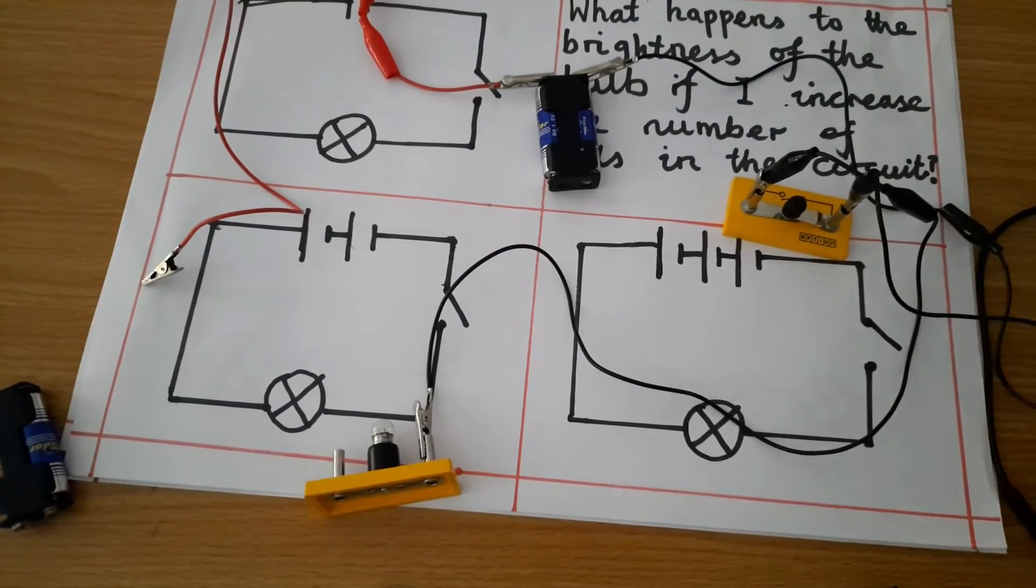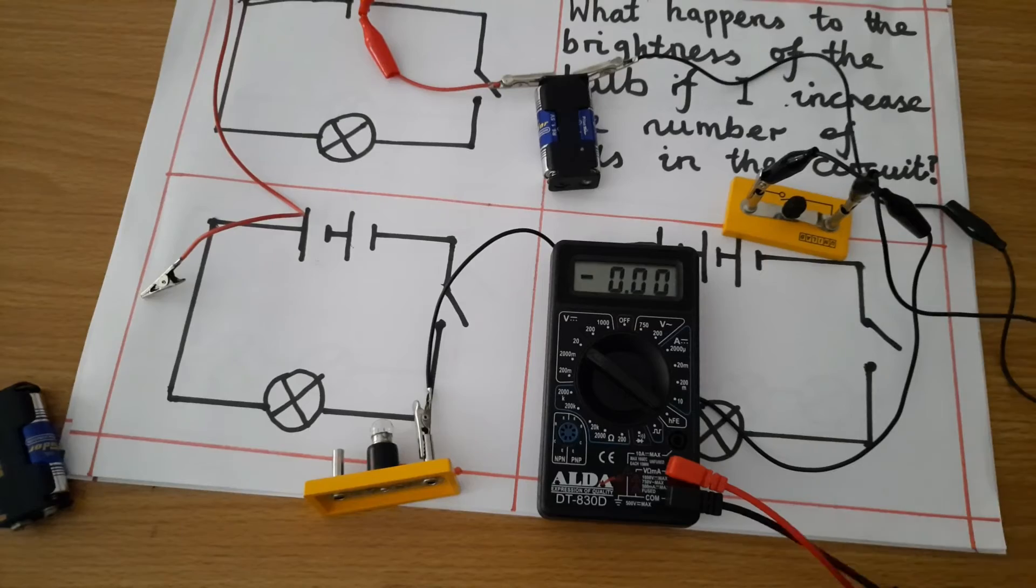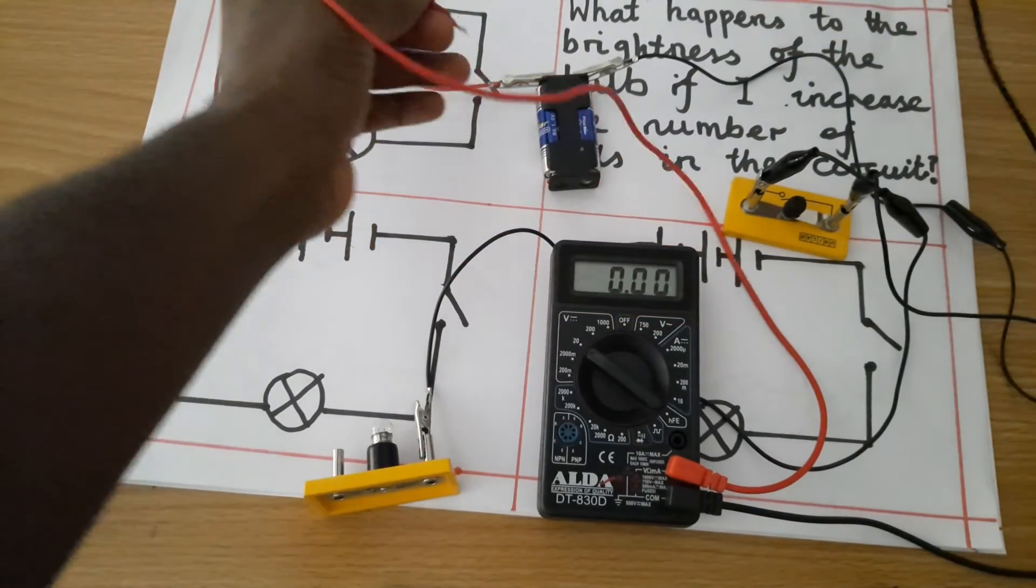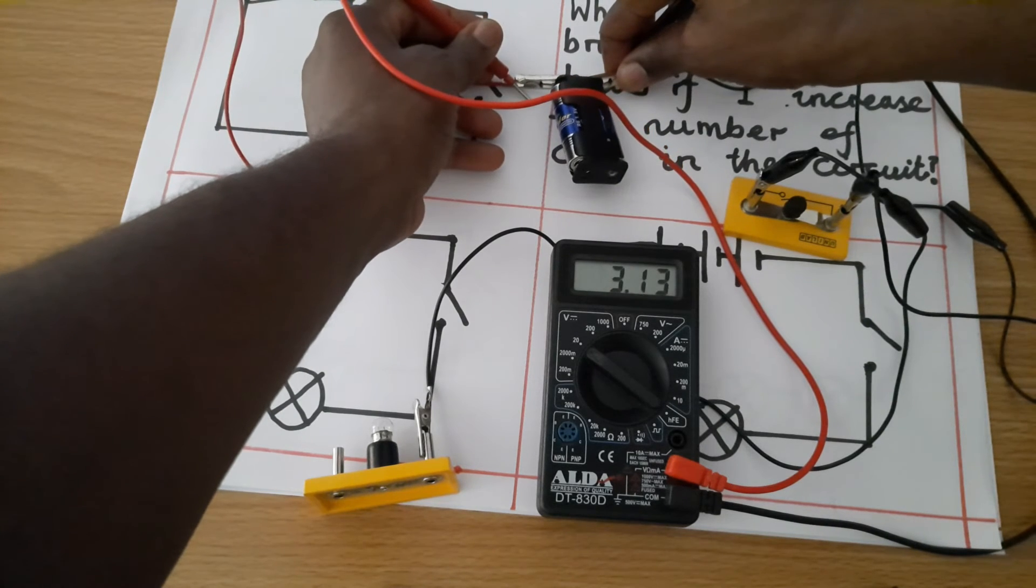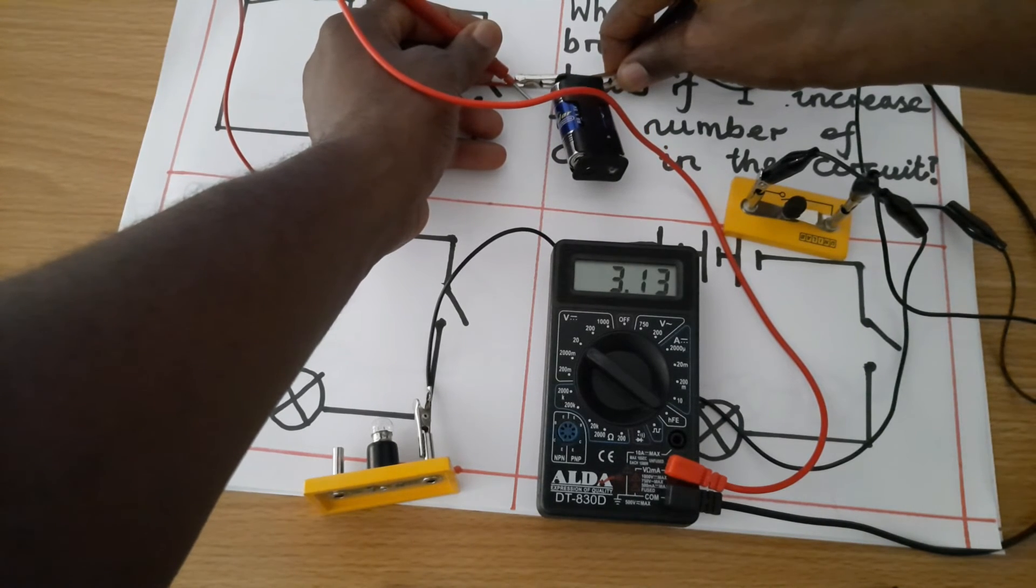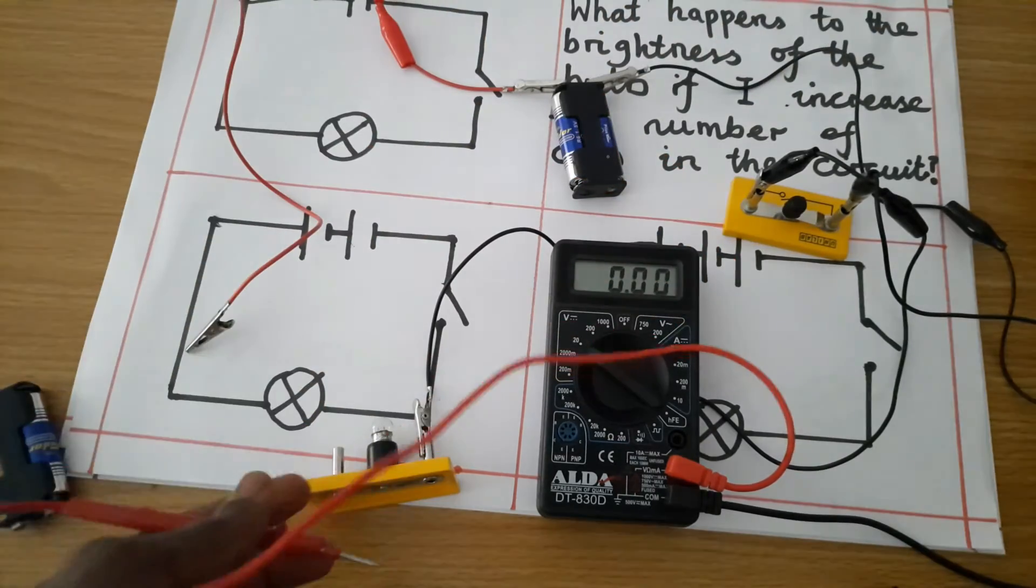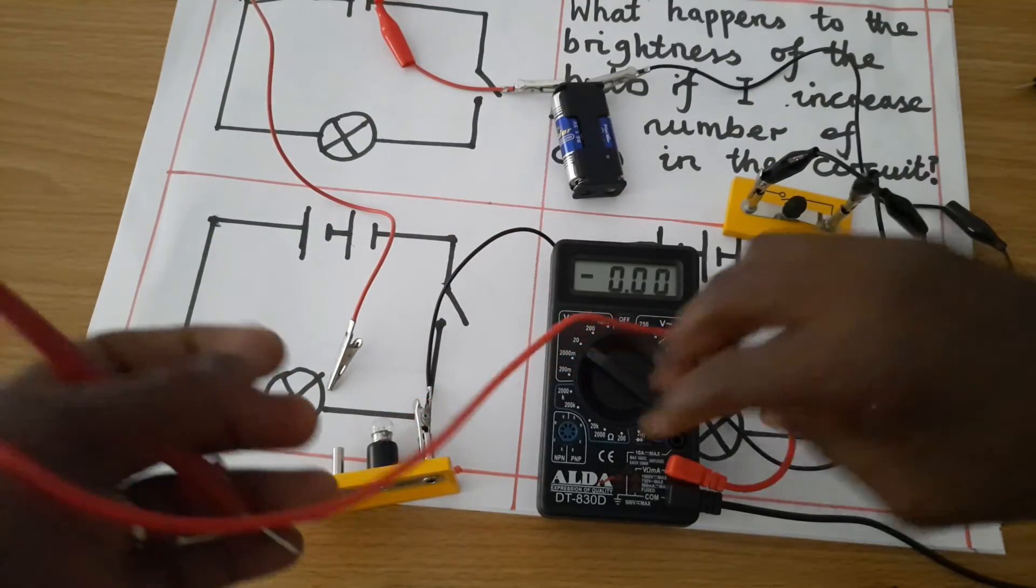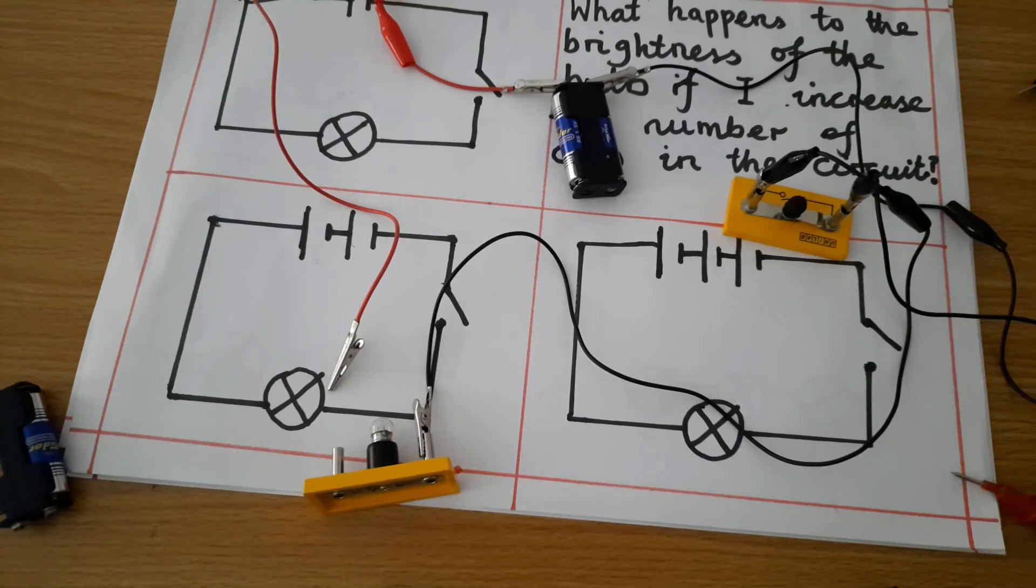Let's measure the voltage of the two batteries. So, just to show you that combining two batteries will increase the voltage. You can see now that I have 3.13 for the two cells. So, as a result of increasing voltage, you could see that the brightness of the bulb became, was increased. So, that is, the bulb became brighter.